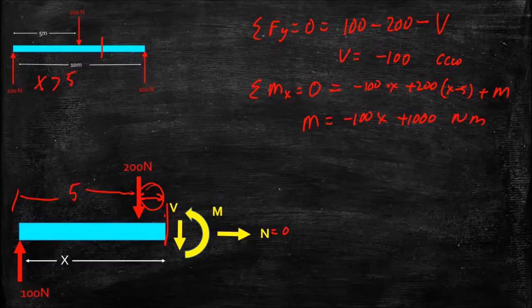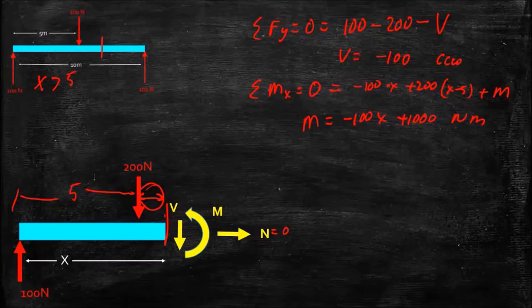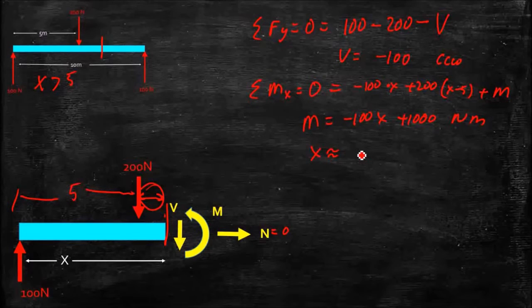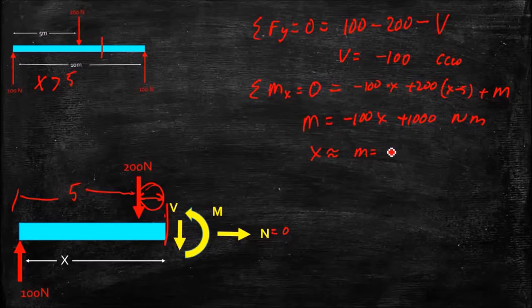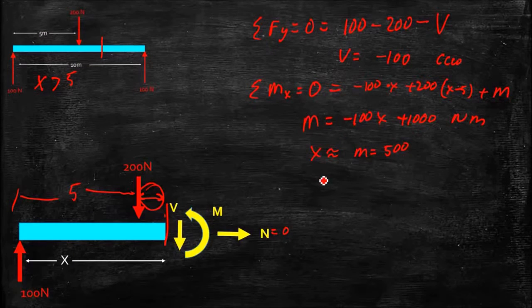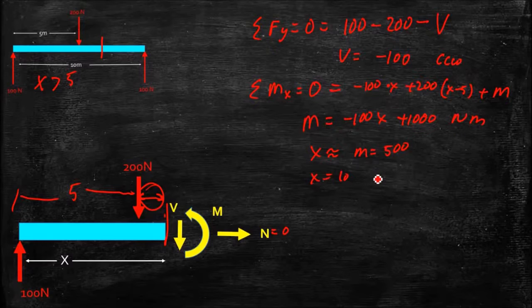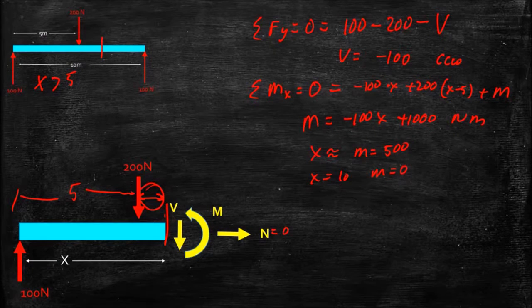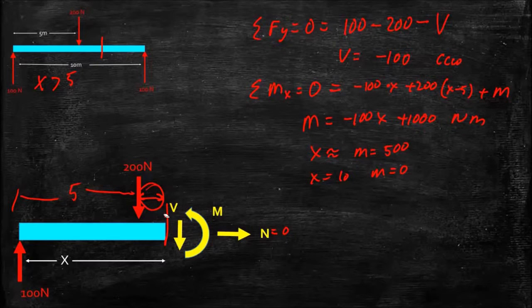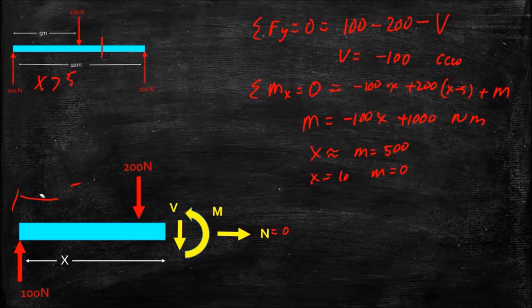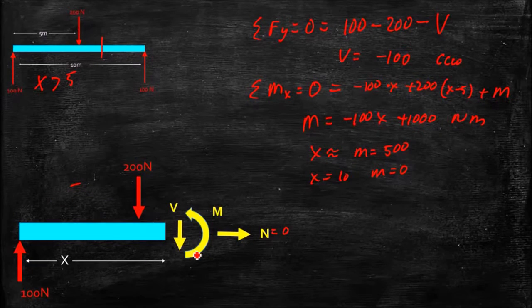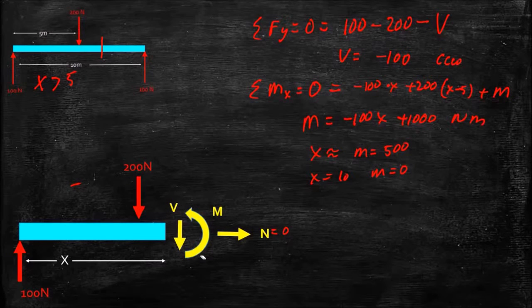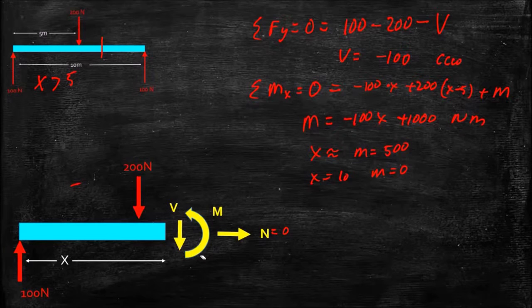And we get again at a couple points, at x approximately equal to 5, I get a moment equal to 500, or thereabouts. At x equals 10, I get a moment equal to zero. And again, if we think of our sign conventions, if I look at how this moment is bending that beam, it's concave upwards, so yes, it is a positive number.